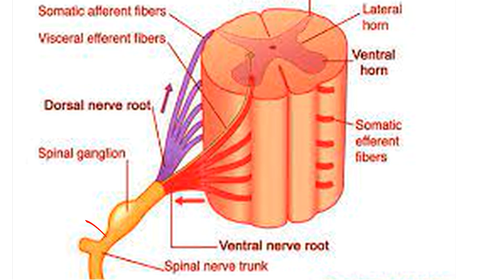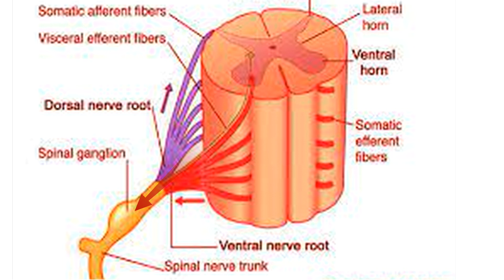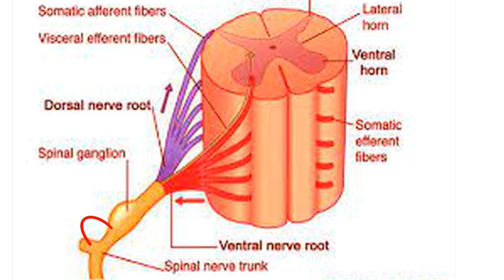So let's check it out. In this picture, this is a spinal nerve because before this area is a forming spinal nerve and after this area there is a dividing spinal nerve. So just this area is the proper spinal nerve.